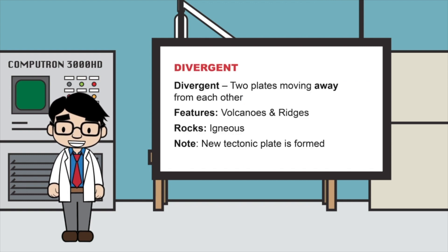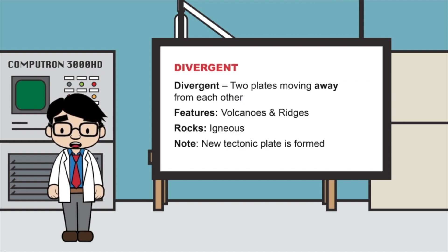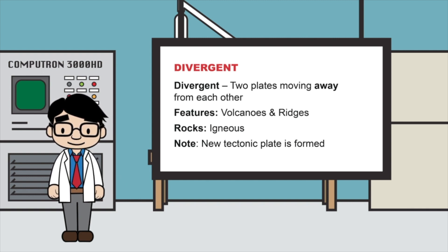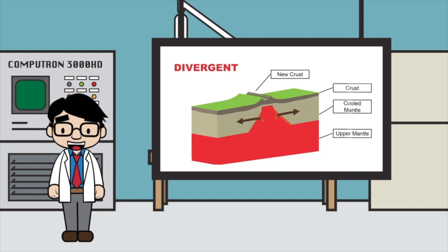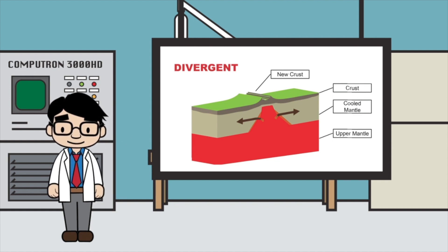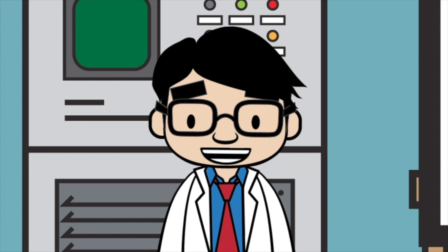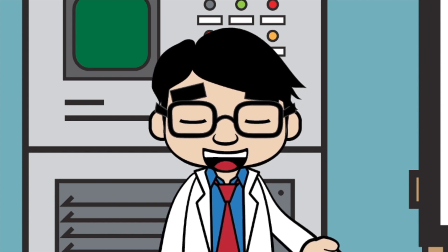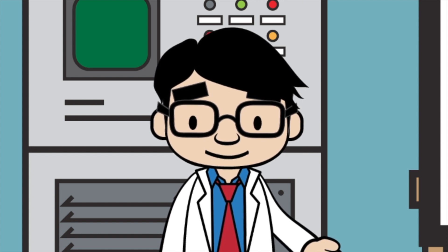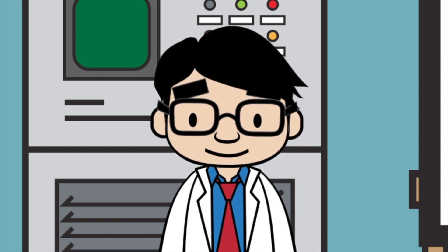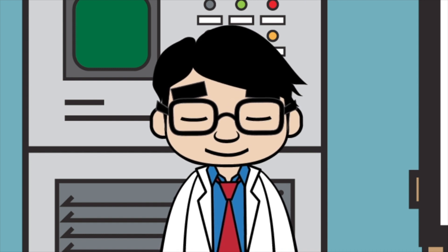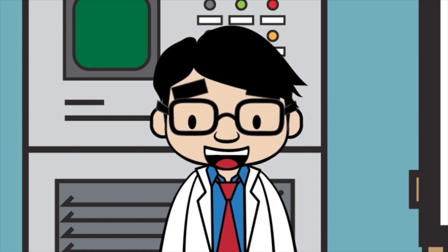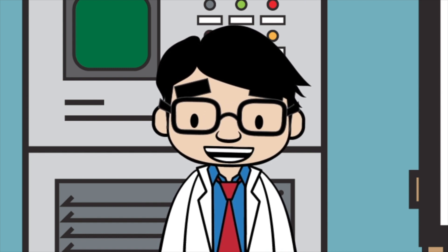In a divergent plate boundary, two plates are moving away from each other. Features of a divergent boundary are volcanoes and particularly ridges. Igneous rock forms here. A divergent plate boundary is also responsible for adding more to a tectonic plate. A transform boundary is when two plates slide past each other. A major feature is earthquakes. There's no specific rocks that form here. Most transform boundaries are underwater, but the California San Andreas Fault is one that is above ground and clearly visible.